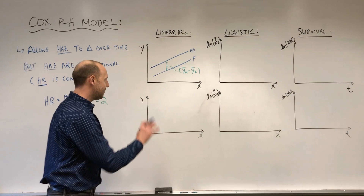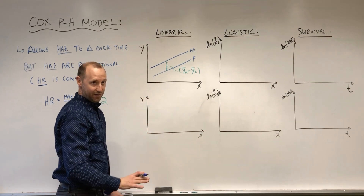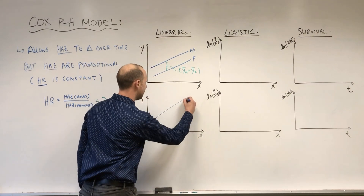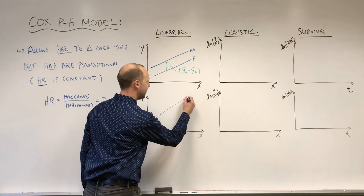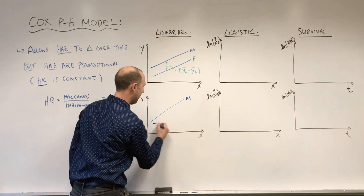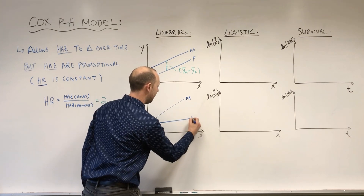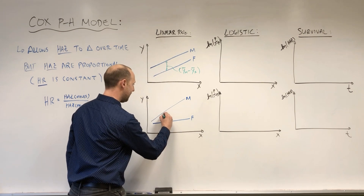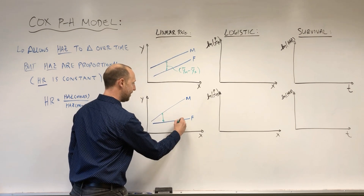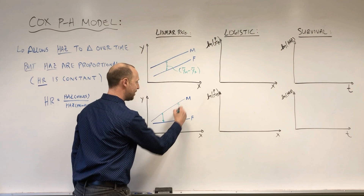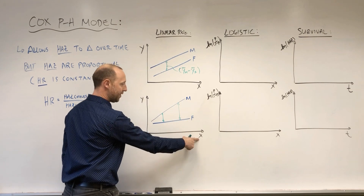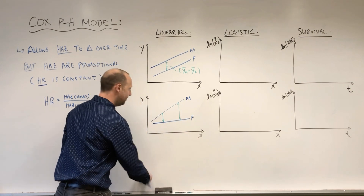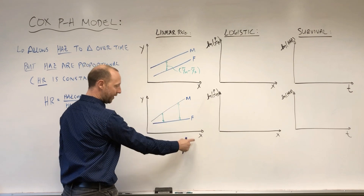When there is effect modification or interaction, we might see something like this — here's the line for males and here it is for females — where that effect, the difference between a male and a female, changes depending on the values of x. That difference in means is growing, or the difference in means depends on where we are for x.